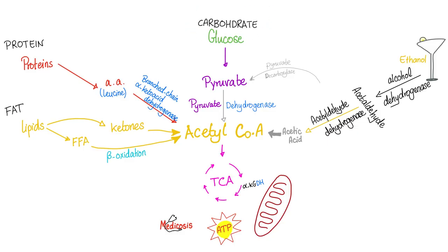Whether you eat carbohydrate, proteins, or fat, the end result is acetyl-CoA, which goes into the Krebs cycle in the mitochondria to give you energy called ATP. From glucose to pyruvate is called glycolysis. If you have enough oxygen, pyruvate will become acetyl-CoA and give you tons of energy. But without enough oxygen — anaerobic glycolysis — pyruvate will become lactate or lactic acid.